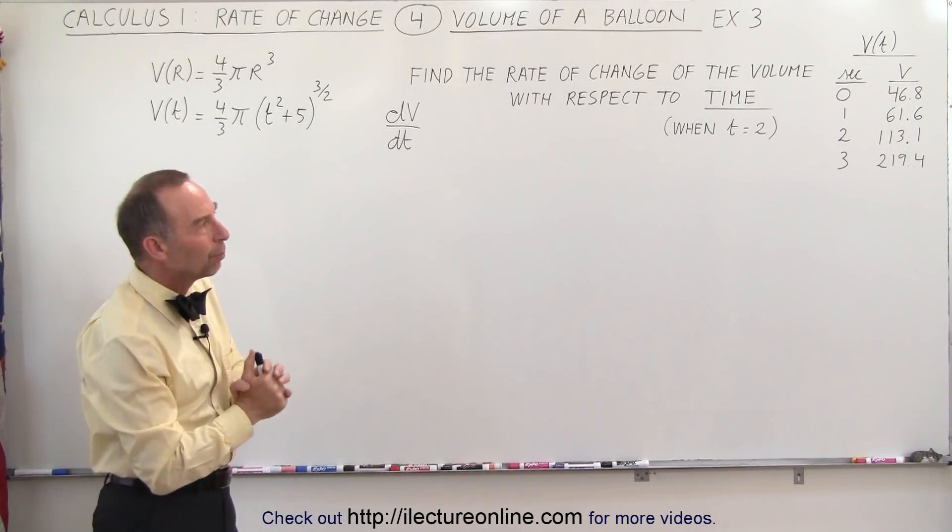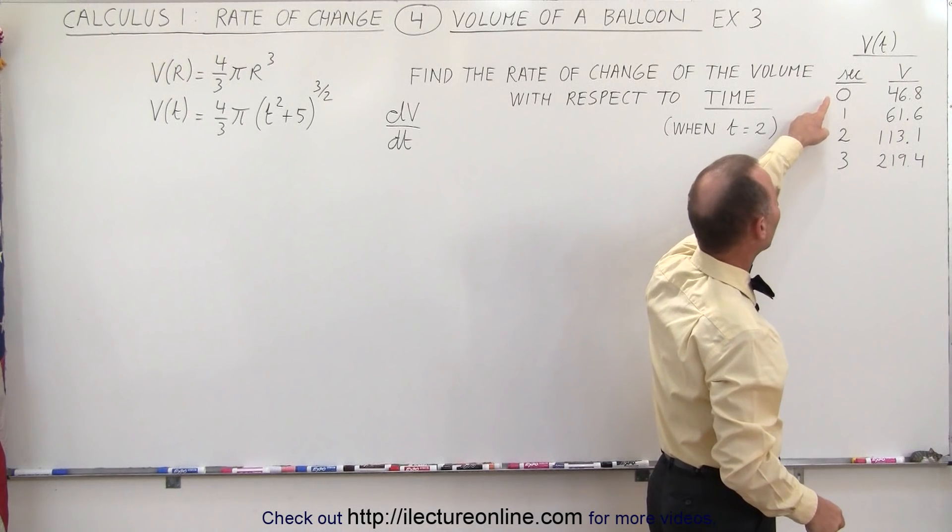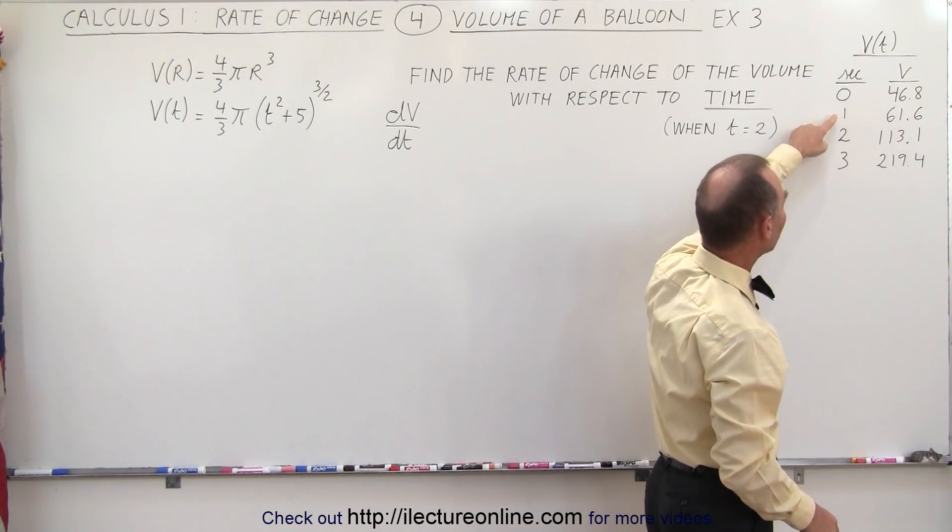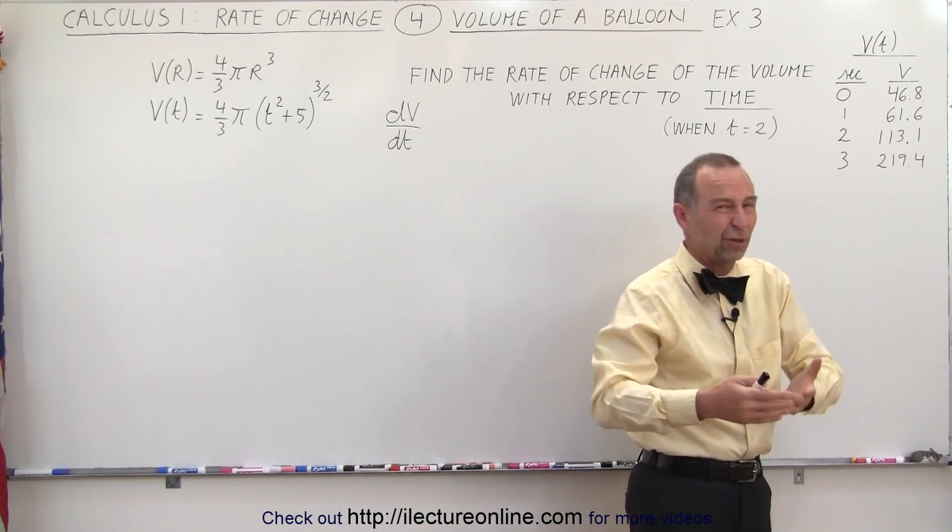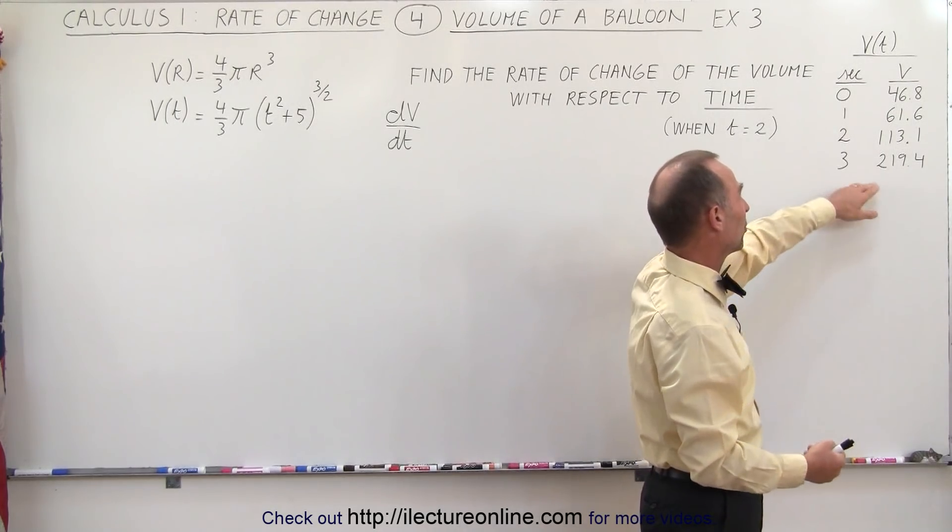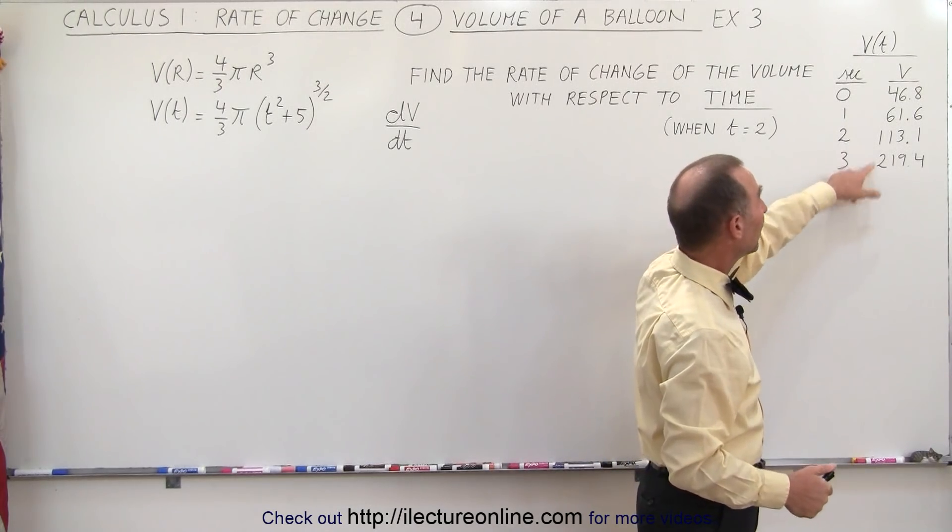To help us understand it a little bit more, I've written down the volume for when t is 0 seconds, 1 second, 2 seconds, and 3 seconds. We can assume that this is in cubic centimeters or cubic inches or cubic meters—it doesn't matter, cubic meters would be a big balloon.